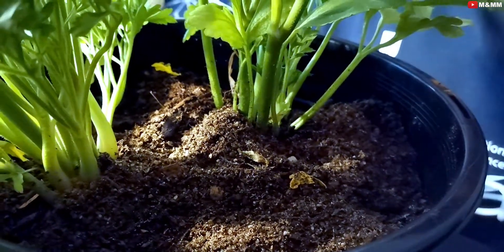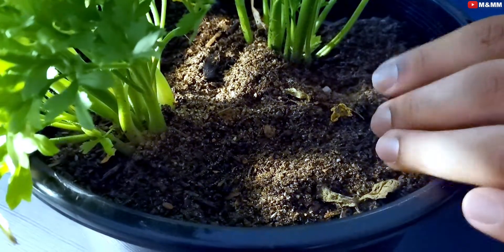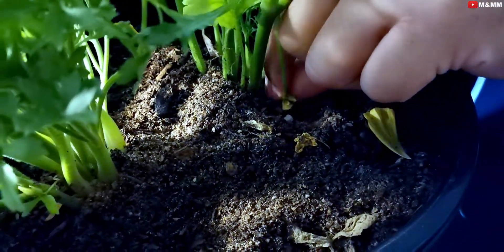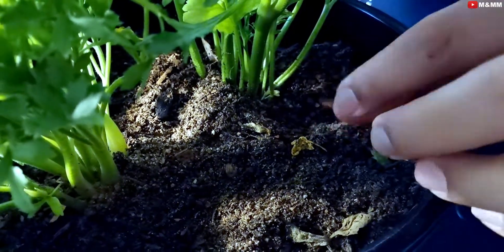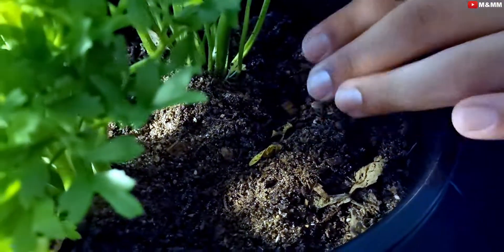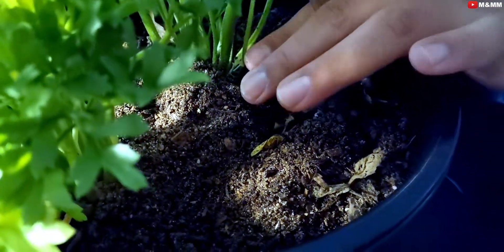One more tip: if you see any leaf in the lower part of the plant, take it off and don't let it grow. If the plant's leaf is touching the soil, this invites a lot of fungus.